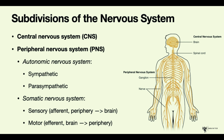One way to remember this is to think of the E in efferent, which stands for exit. So the information exits the brain to go to the periphery, and we know that afferent information flows in the opposite direction, from the periphery to the brain.